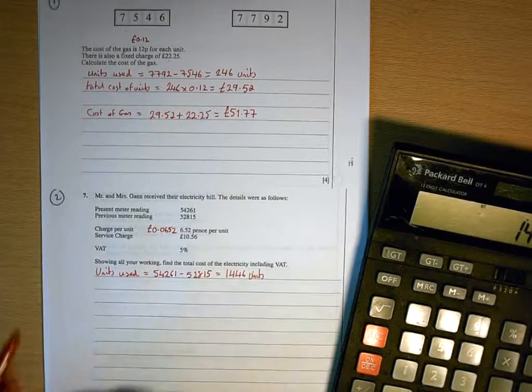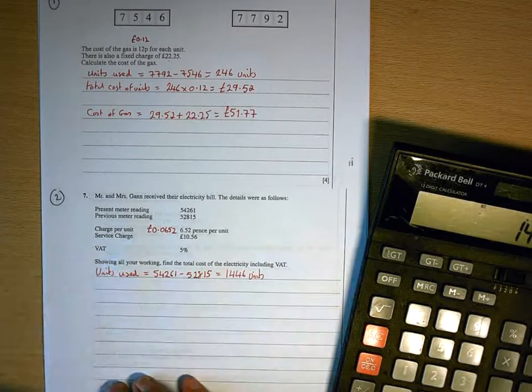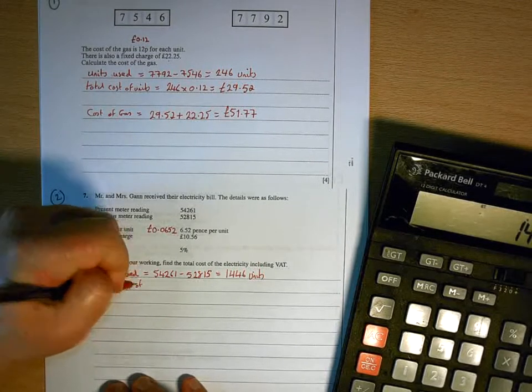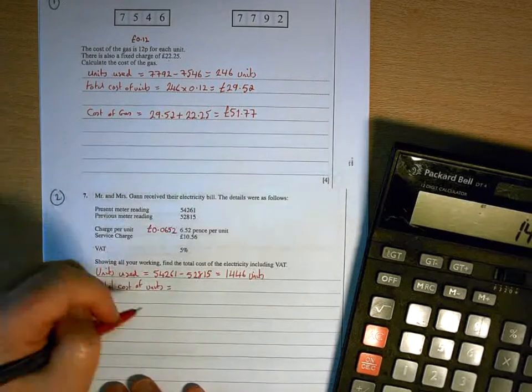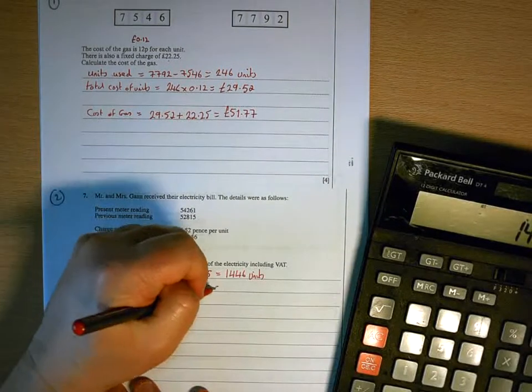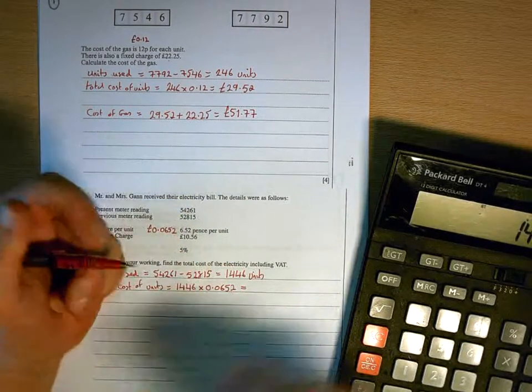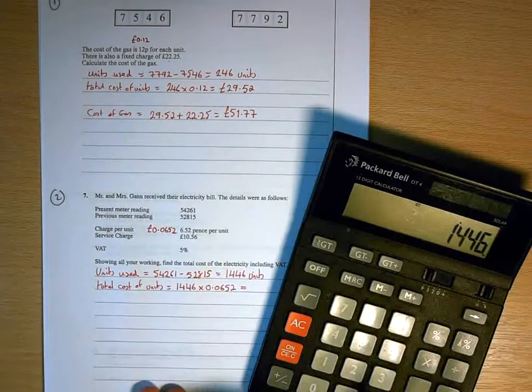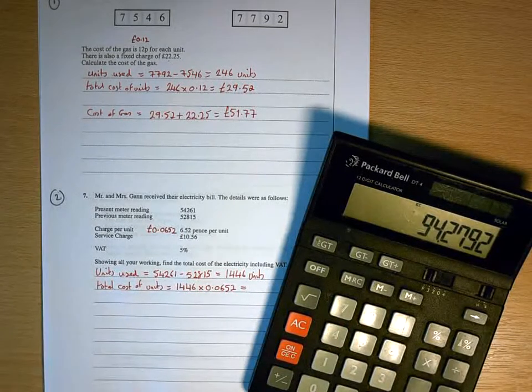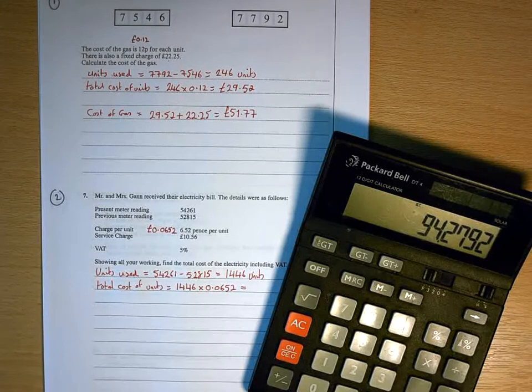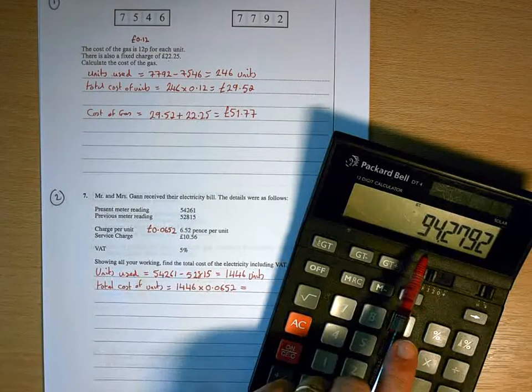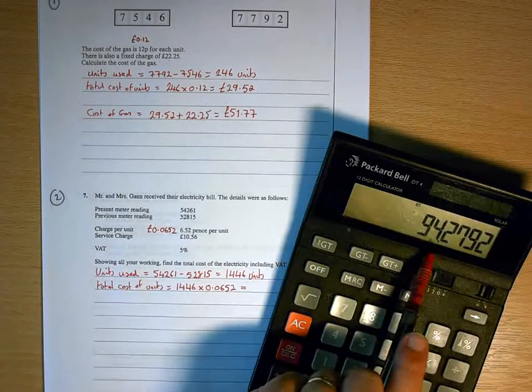So the cost of the units this time is going to be the number of units we've used multiplied by the cost per unit. So total cost of units would be 1,446 times 0.0652. And remember, the answer is going to be in pounds. OK, so that's 94.2792. Because we're in pounds, we round that off to two decimal places.